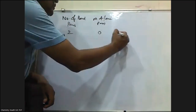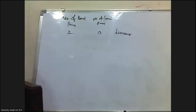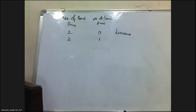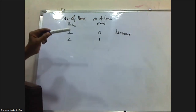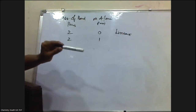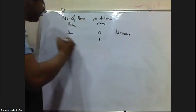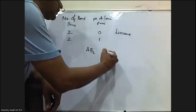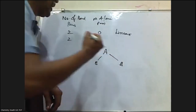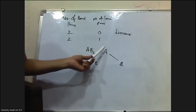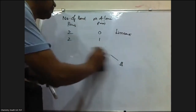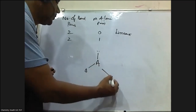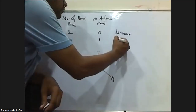Now considering bond pairs with lone pairs: two bond pairs and zero lone pairs gives a linear shape. Two bond pairs and one lone pair — the three pairs are arranged in trigonal planar geometry. For example, in an AB2 molecule where atom A has one lone pair, the two bond pairs and one lone pair arrange in trigonal planar, but the actual shape of the molecule is bent.